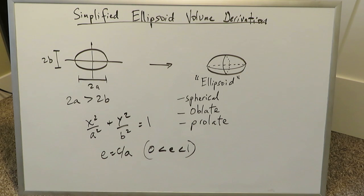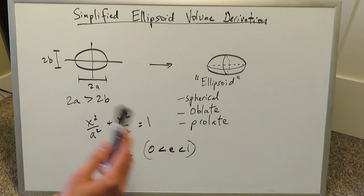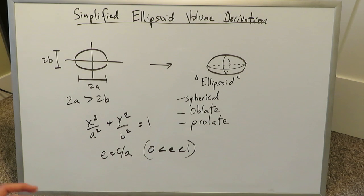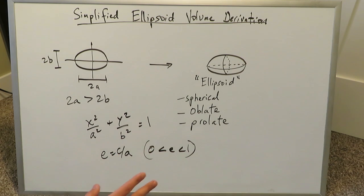Good morning everyone. We're looking here at a simplified derivation procedure for the ellipsoid volume. There are many routes to deriving the volume formula for an ellipsoid, and we're looking at an easy simplified manner which will take into account a very interesting and necessary assumption. This procedure can lead you to a good formula for an ellipsoid volume derivation.